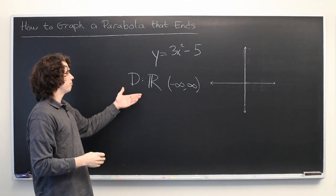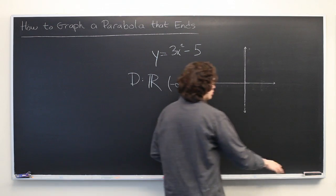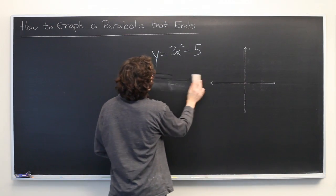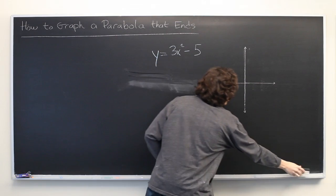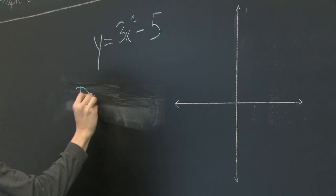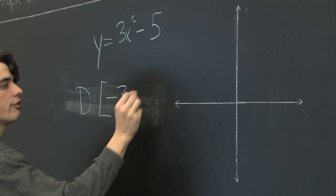So if there is no domain given, this is typically what is assumed. But suppose that that's not the case. Suppose that instead we are given a very specific domain. We're told that this is only defined from negative 3 to 5.